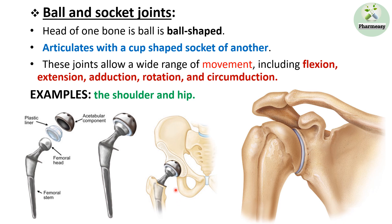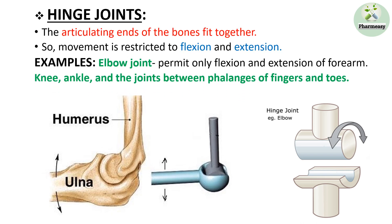As the figure shows the ball and socket joint of the hip bone and the shoulder bone. The next joint is the hinge joint. Articulating ends of the bones fit together so movement is restricted to flexion and extension. Examples of hinge joints are the elbow joint, which permits only flexion and extension of the forearm, and the knee, ankle, and the joints between phalanges of fingers and toes. This diagram shows the elbow joint present between the humerus bone and the ulna. These joints allow only unidirectional movement.